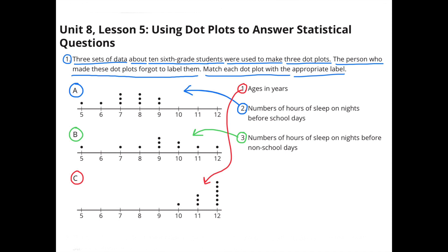The dot plot that made the most sense to me was letter C, because most 6th graders are between the ages of 10 and 12. Dot plots A and B were fairly similar, and I figure on nights before non-school days, students might be sleeping in and waking up a little bit later, so I selected dot plot B for number 3, the number of hours of sleep on nights before non-school days.